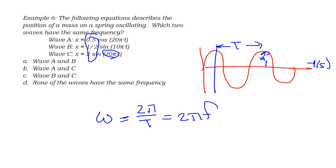Since A and C have the same coefficient in front of the T, the 20 pi, they will have the same frequency, and so the answer is choice B.